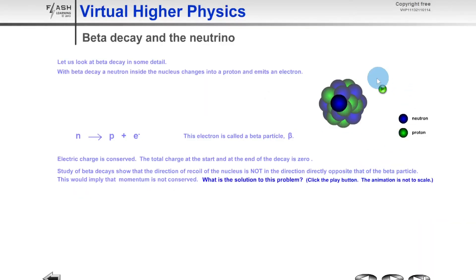If we look back at our simulation and click play, you'll see we now have two particles being emitted. We still have the electron moving off in this direction shown by the red arrow, and then we have the direction of the neutrino shown by this purple arrow.